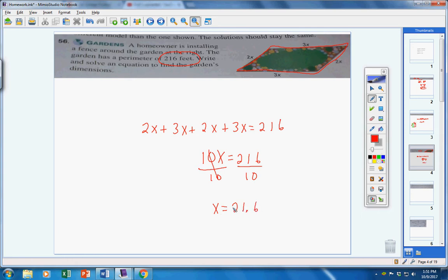That's not your answer. The question is, find the garden's dimensions. In other words, they want to know what the length is and what the width is. The length is the longer side, which is 3x. X is 21.6, so 3 times 21.6 would give you 64.8. That's feet, because your 216 is in feet.